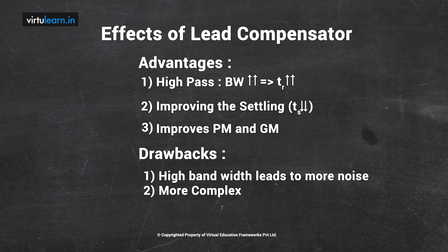The drawbacks of the lead compensator — similar to a PD controller — are: the increased bandwidth lets more noise into the system, degrading the signal-to-noise ratio. An extra amplifier is required to compensate for the attenuation factor α, adding cost and space. The maximum phase lead available is 60°; if more is needed, multiple cascaded (multi-section) compensators are required.